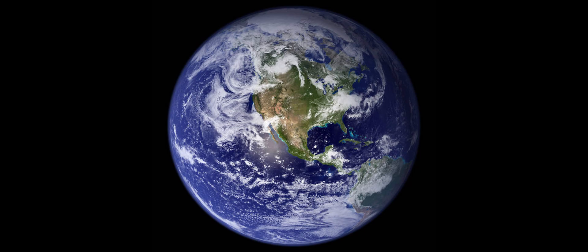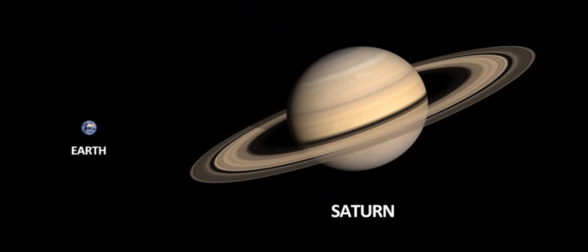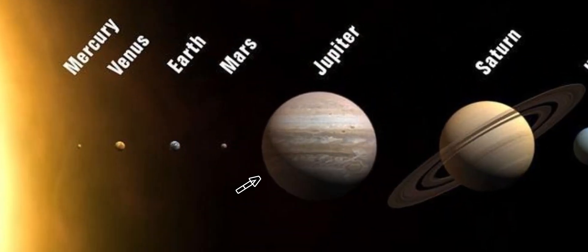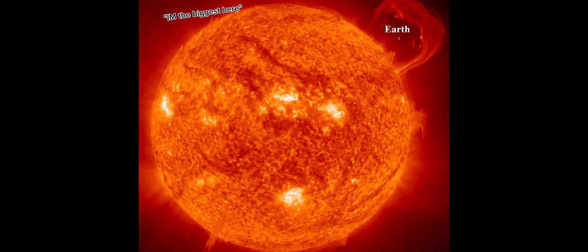But based on the cosmic scheme of things, Earth is tiny. Even in our own solar system, we are easily dwarfed by the planet Jupiter, for example, which could fit more than 1,300 Earths inside, and our Sun, which could fit more than a million Earths.